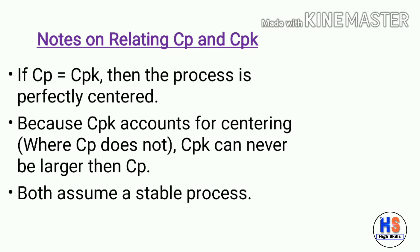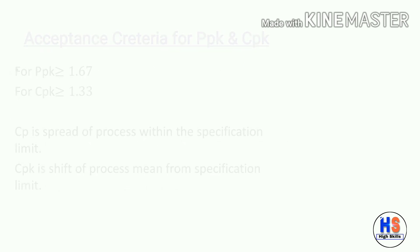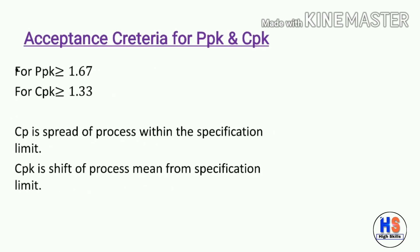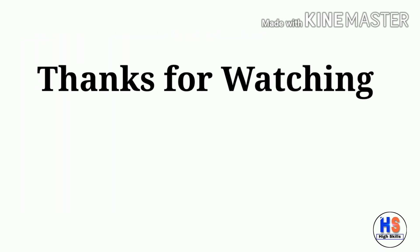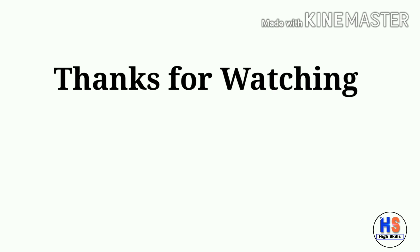Some key notes: if CP equals CPK, the process is perfectly centered, because CPK accounts for centering while CP does not. CPK can never be larger than CP. Both assume a stable process. For acceptance criteria: PPK should be greater than or equal to 1.67, and CPK should be greater than or equal to 1.33. In summary, CP is the spread of process within specification limits and CPK is the shift of process mean from the specification limit.